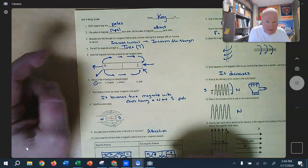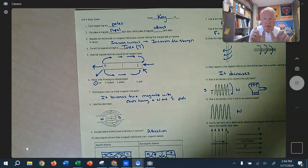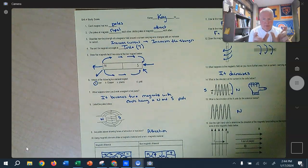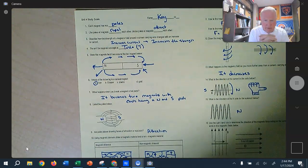What happens if you break a magnet in half? One magnet becomes two magnets, a north and south, and a north and south. You can keep going. It's just going to keep happening.